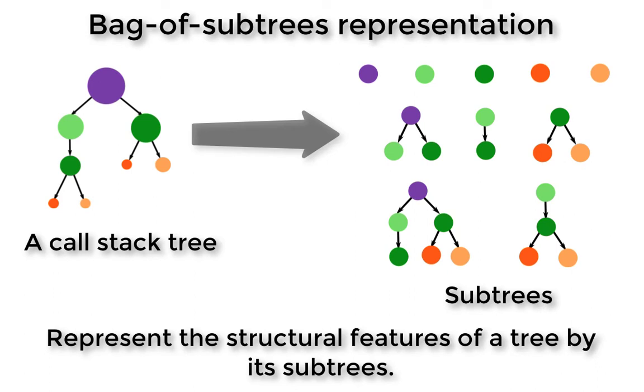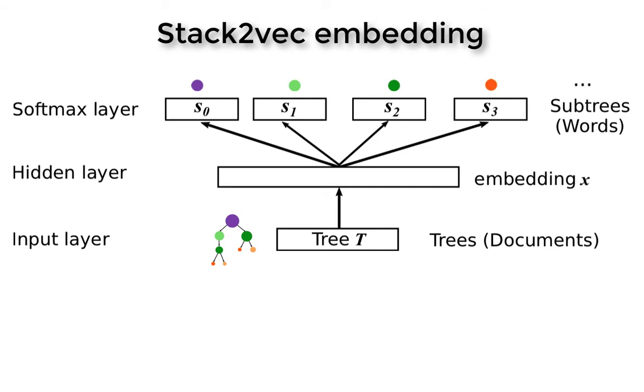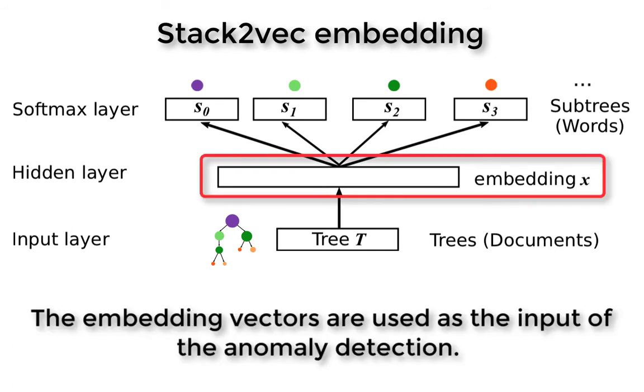With these subtrees, our proposed stack2vec is used to embed each tree structure to a vector. The call stack tree embeddings are used as the input of the anomaly detection.